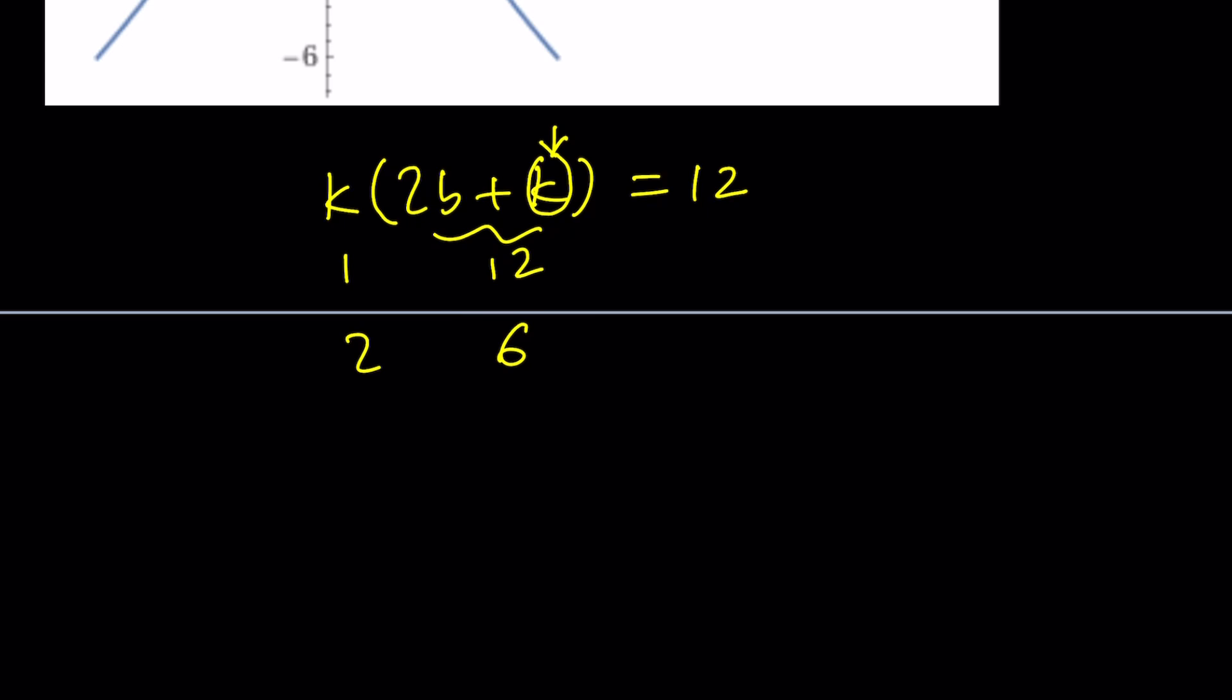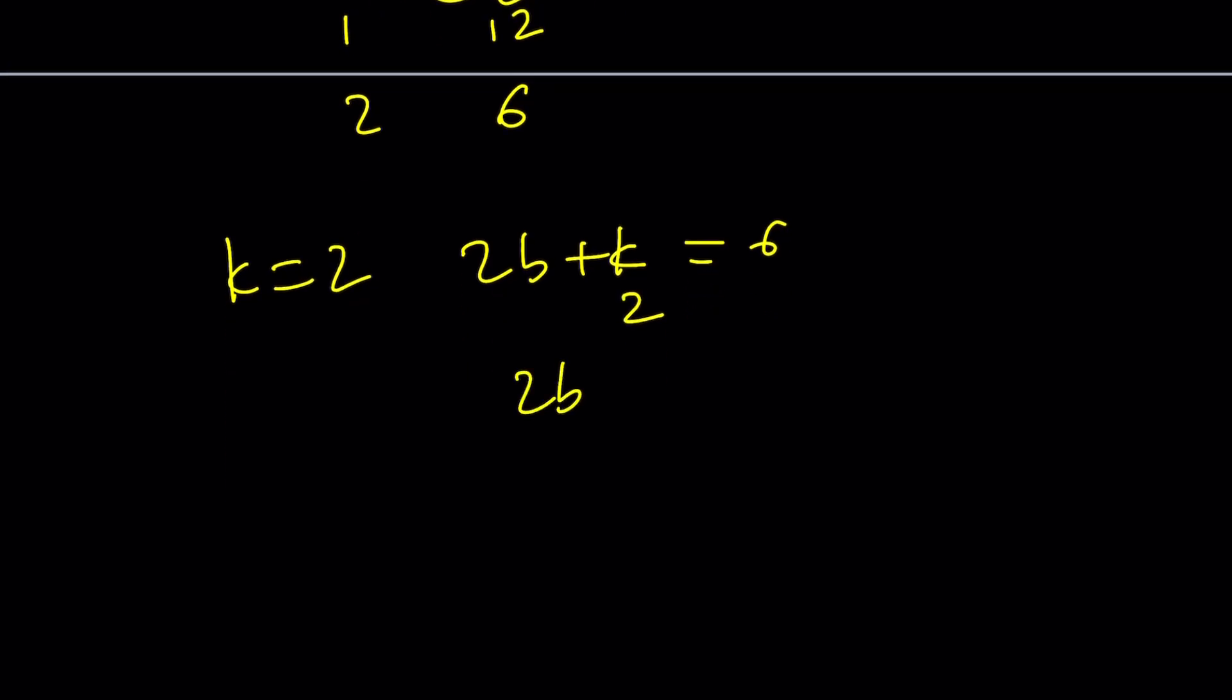So from here, what do we get? For k = 2, and 2b + k = 6, since k is equal to 2, we can go ahead and replace it with that, and that gives us 2b = 4, and b = 2.